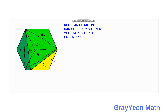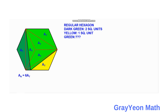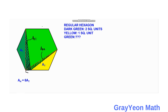Now that we know this hexagon can be divided into six equal parts, we focus on the dark green portion and the yellow portion, and remove the lines that we are not needing.